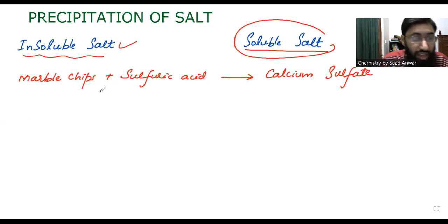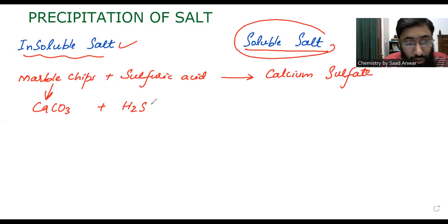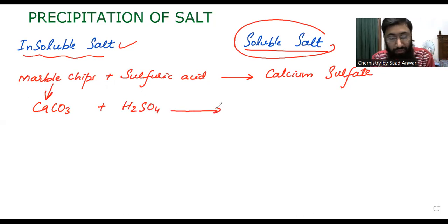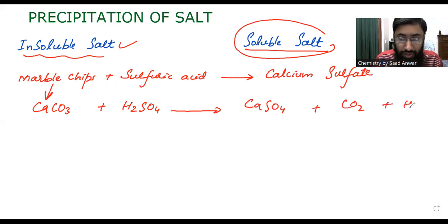The formula for marble chips is calcium carbonate, CaCO₃. The formula for sulfuric acid is H₂SO₄. When calcium carbonate reacts with sulfuric acid, one product is calcium sulfate, and the rest are carbon dioxide and water.